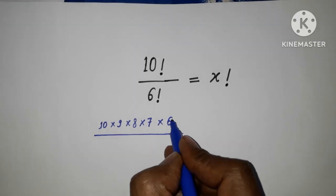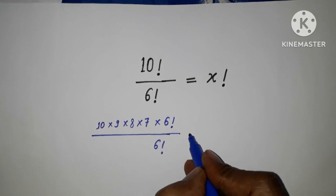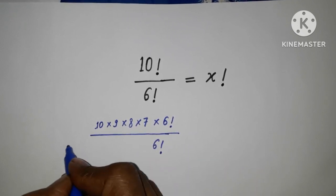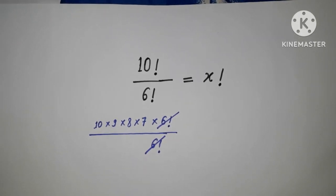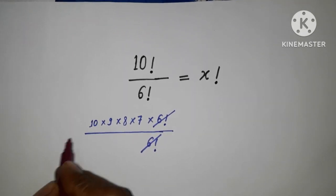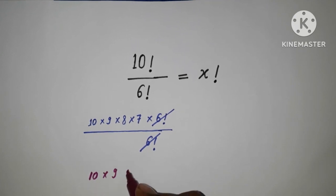After this one can be written as 6 factorial up to here, and here 6 factorial, that is here. So this one is going to cancel over here, and we can write here 10 into 9 into 8 into 7.